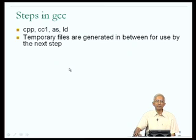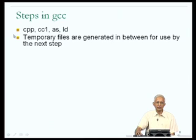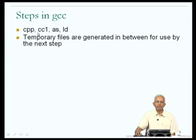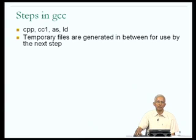In the process of translating the source program hello.c into an object program a.out, GCC uses these steps and along the way it generates temporary files. For example, after CC1 has finished its work, it generates an output — a temporary file which is then used by AS to do its work in the next step. These temporary files, if available to us, may provide some idea about what is happening to our program as it gets translated by GCC.